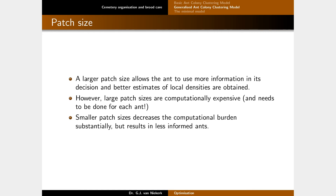On patch size: a larger patch gives the ant more information to decide whether to pick up or drop an item, but it is computationally expensive since it must be done for each ant at each location. It can be sped up with memoization and multi-threading, but remains costly. Smaller patch sizes reduce computational burden but result in less-informed ants, leading to many small clusters that could have been merged together with a larger patch.